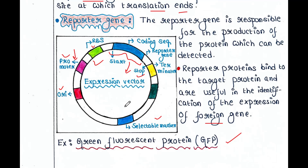In summary, cloning vectors and expression vectors share three common features: ORI, selectable marker, and cloning site. Expression vectors additionally contain a promoter, RBS, reporter gene, and transcription termination site. That is all about today's lecture. If you want the PDF notes of this topic, please check the description box or the first pinned comment. Thank you.